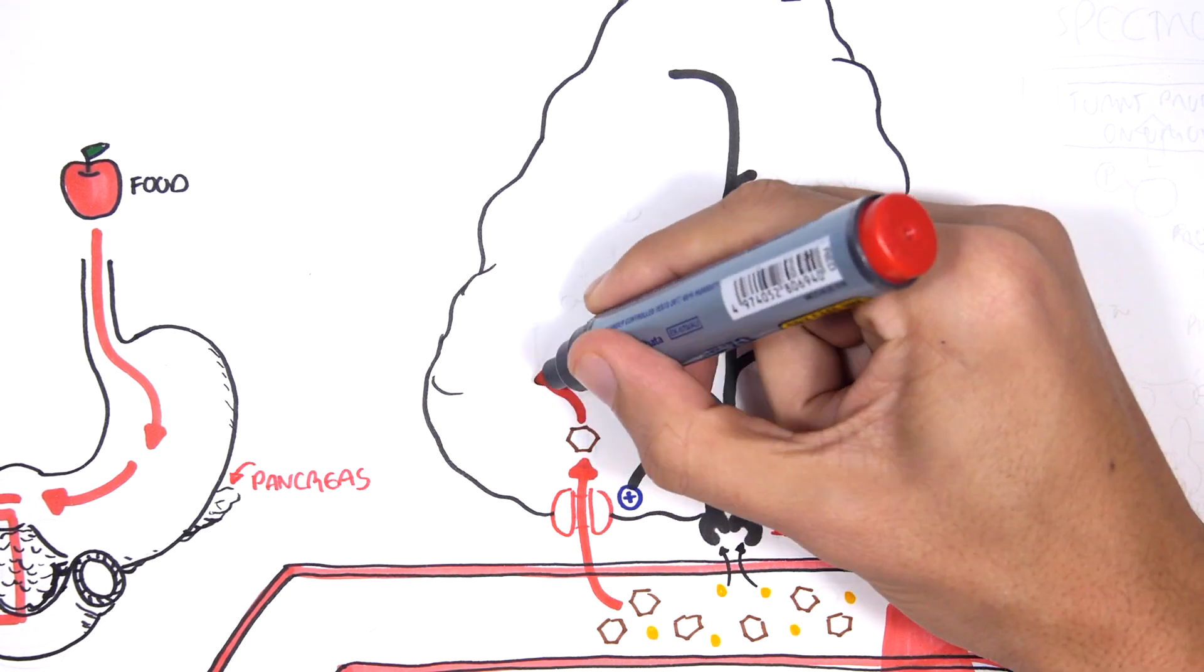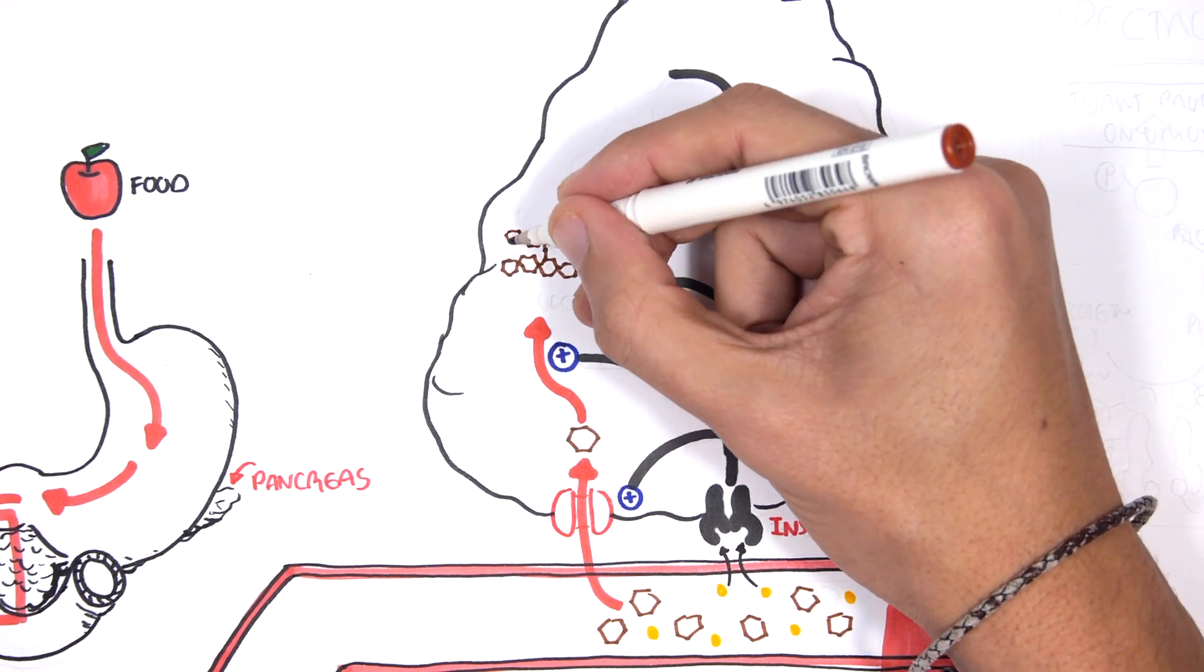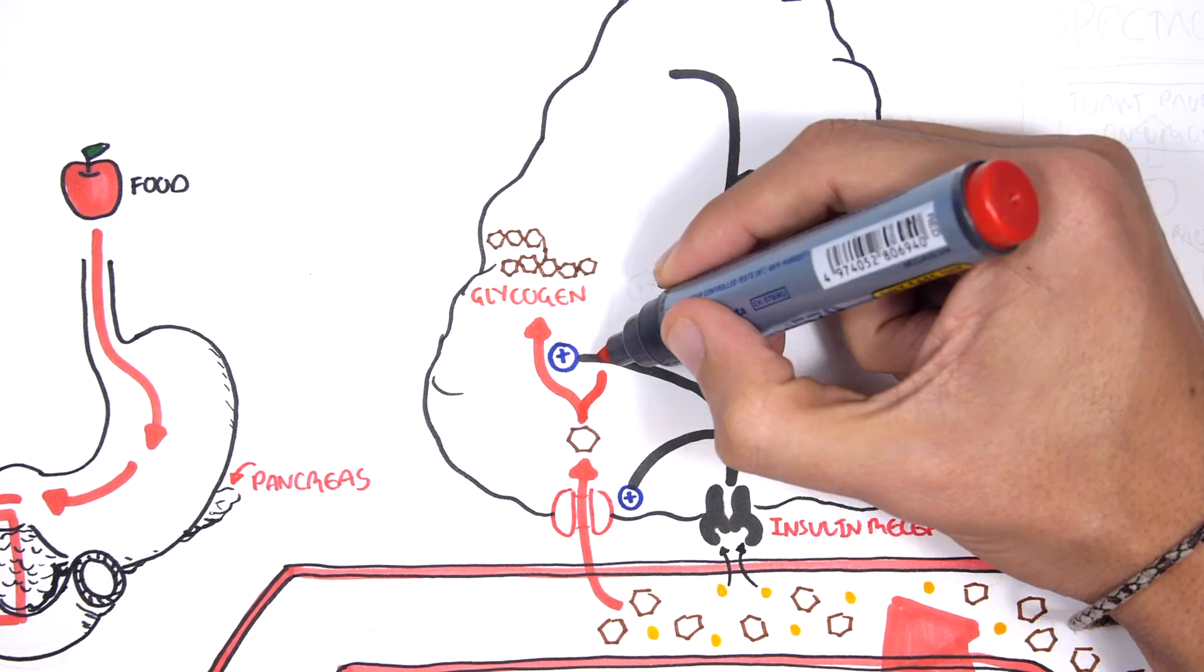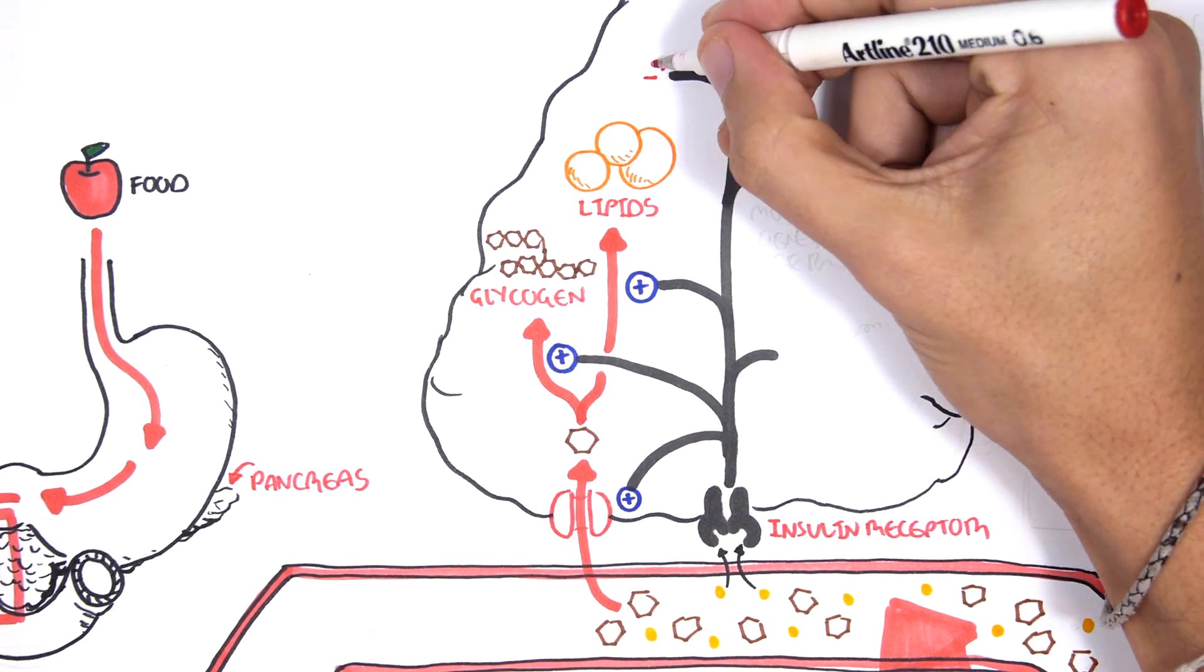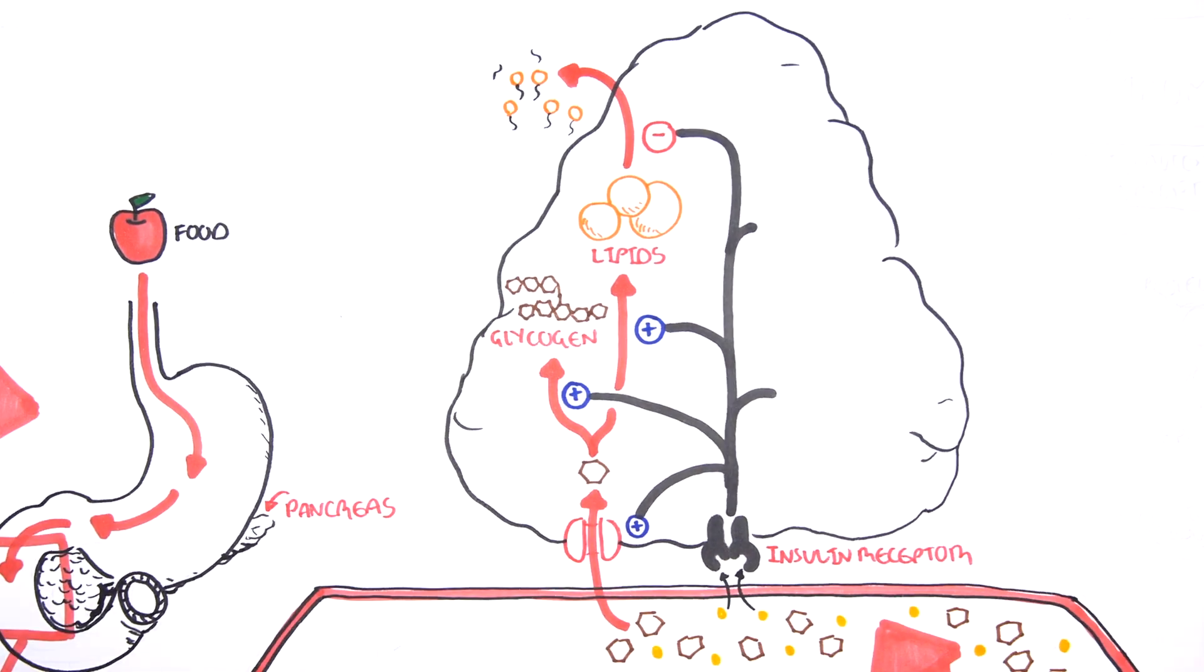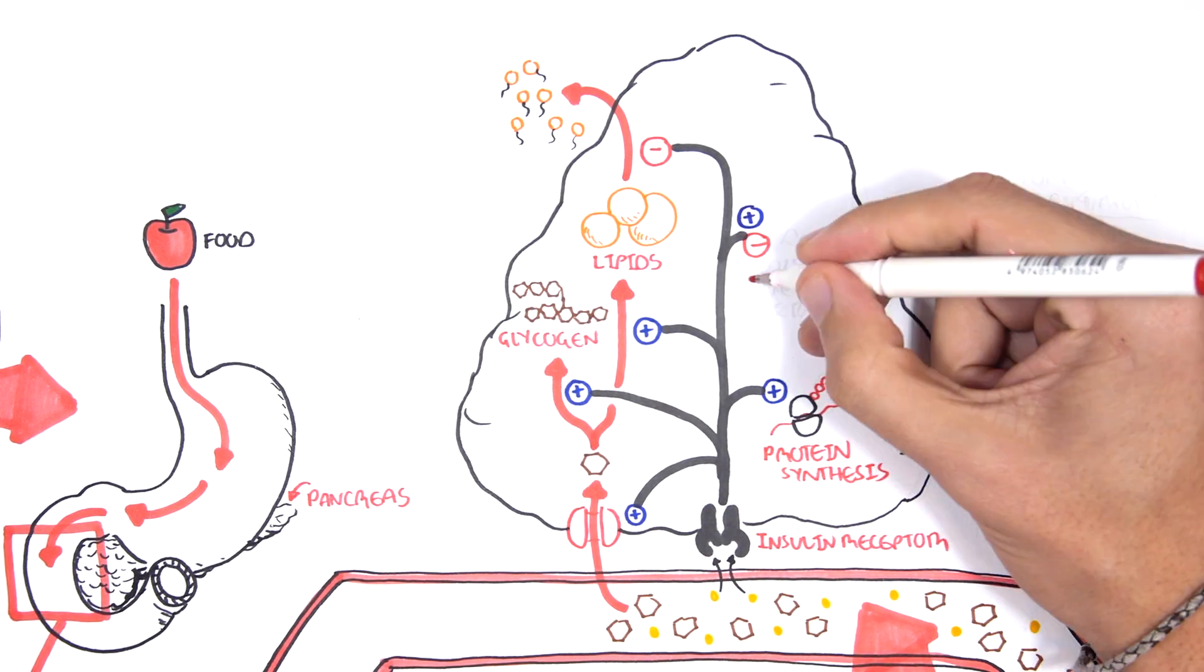These outcomes include the uptake of glucose and promoting glucose storage in the form of glycogen. In fat cells, insulin promotes glucose storage in the form of lipids, inhibits the breakdown of lipids, stimulates protein synthesis and modifies gene expression.